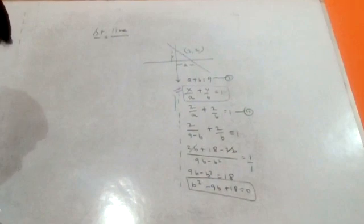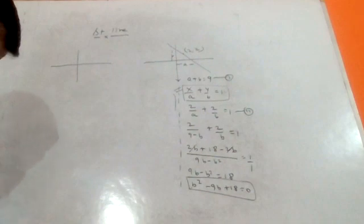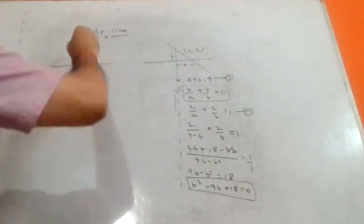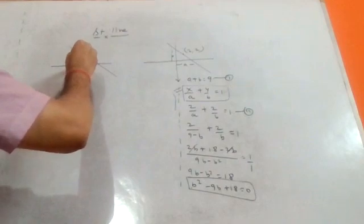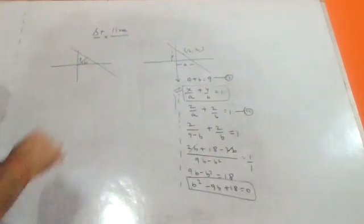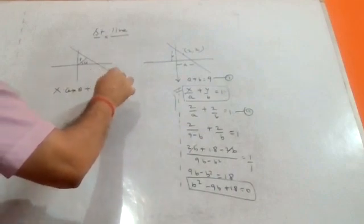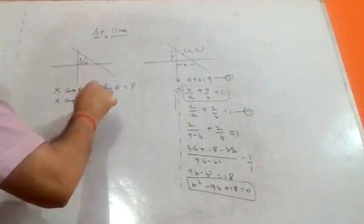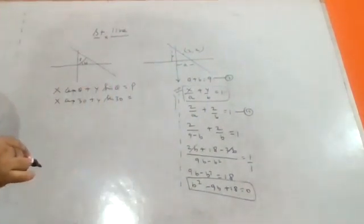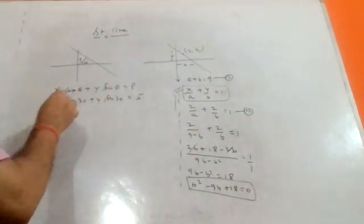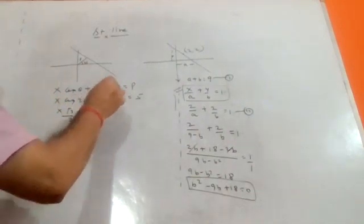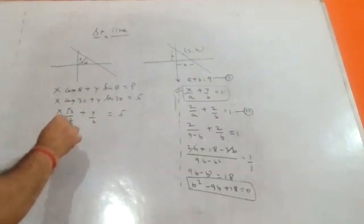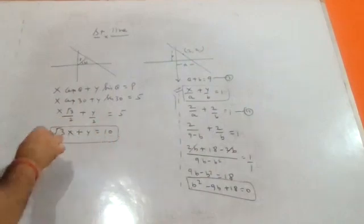Now for the normal form type of problem: the perpendicular distance from the origin is five, and an angle is made by the perpendicular. Applying the normal form x cos theta plus y sin theta equal to p, where p equals five. With cos theta equal to root 3 over 2 and sin theta equal to one half, we get root 3 times x plus y equal to ten. This is the proper answer.